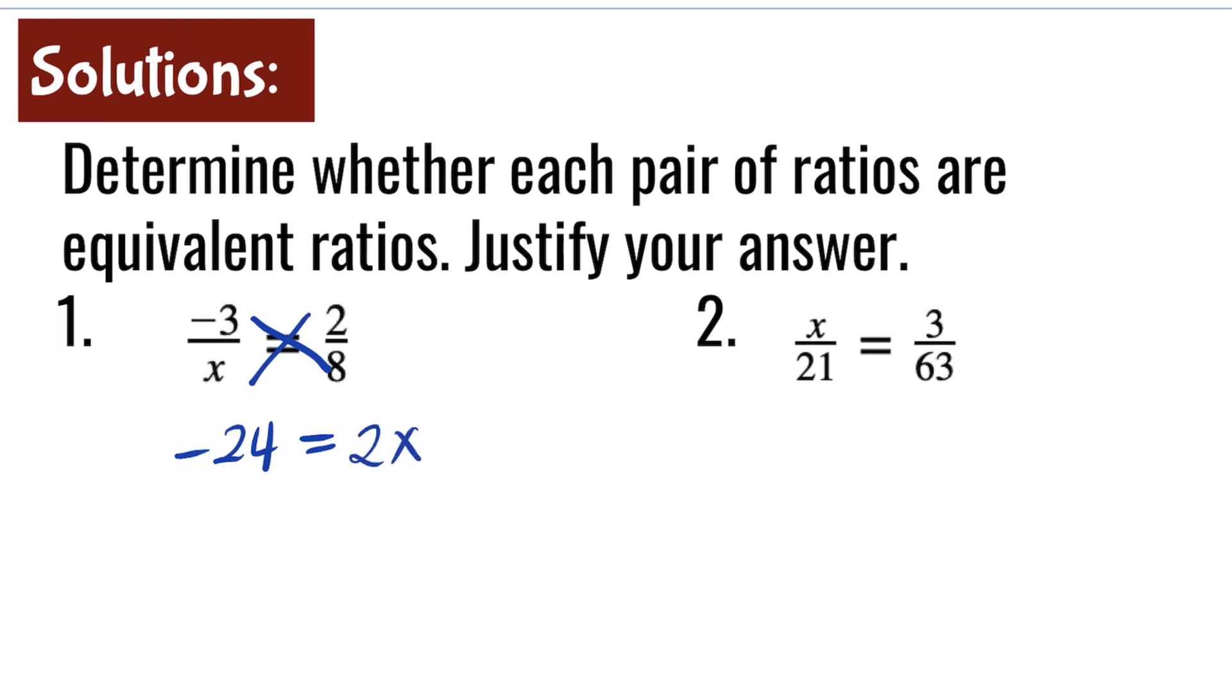Solving for x by itself, we need to do the inverse operation. And this is by dividing both sides by 2. So negative 24 divided by 2 is negative 12. And 2x divided by 2 is 1x. So x value is equal to negative 12.